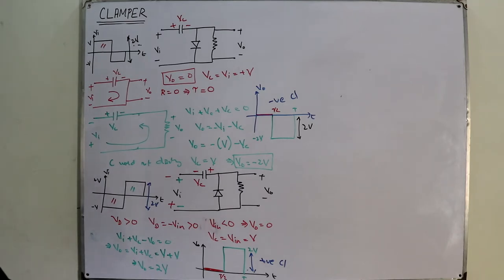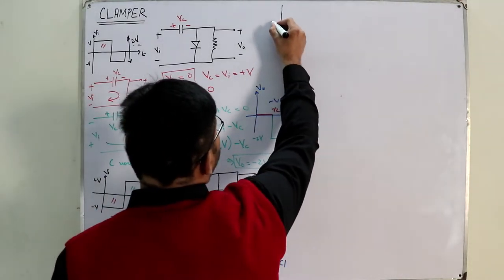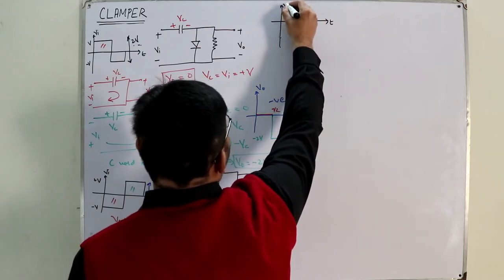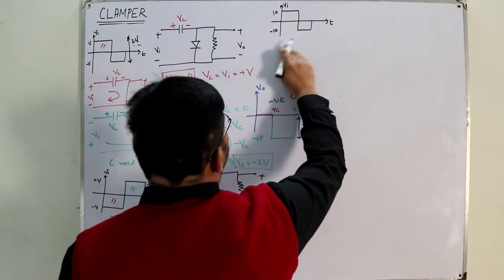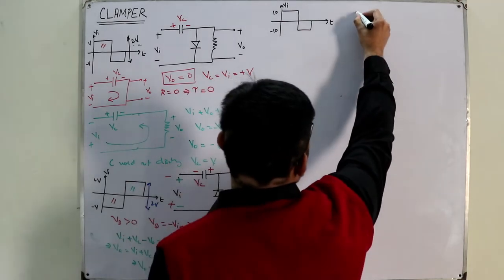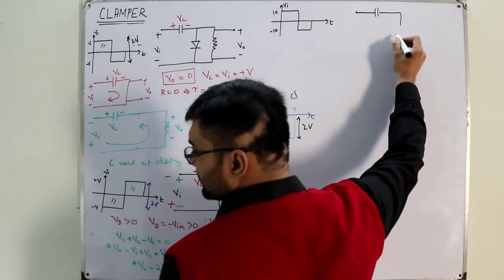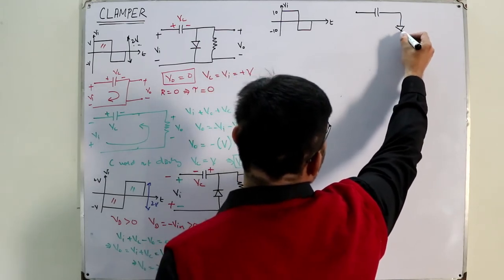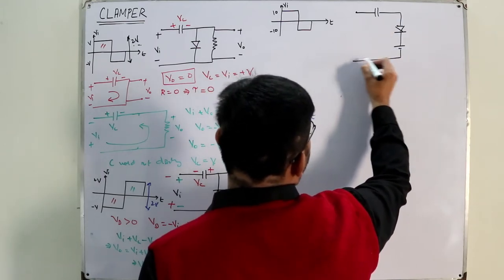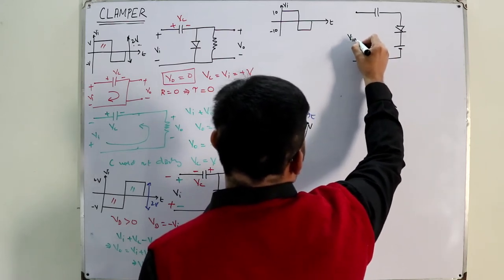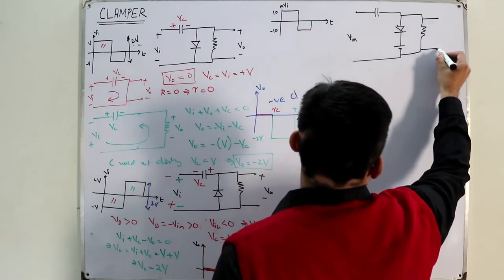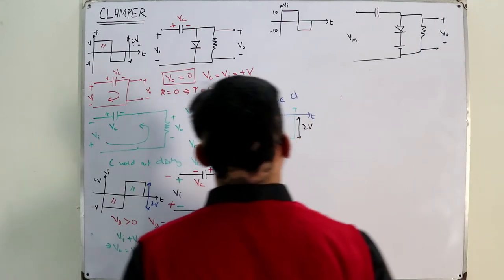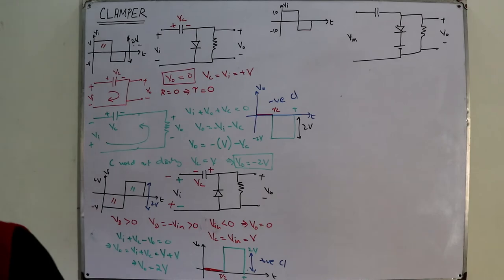Now let's say we have biasing involved. The input is again a square wave. This time we are given values of plus 10 and minus 10. The circuit is given: capacitor, diode, another source — a 2 volt source — V input, and load resistor. Plus-minus output is taken. This is a 2 volt source.